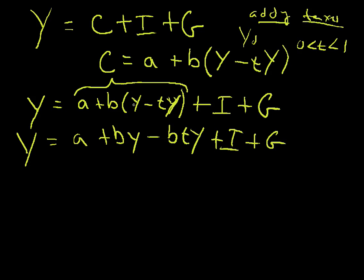Y equals a plus by minus bty plus i plus g. I just multiplied b times y and b times negative ty. And now I'm going to bring all those terms that have the y's in them back over to this side.